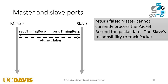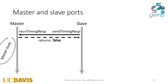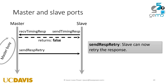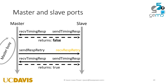Similarly, when you call send timing response, the master could be busy, so the master can return false. At some point it will send the slave a send response retry, at which time the slave can try to resend the response. So you have this handshake on either side that allows you to be busy and not have to accept every single request.